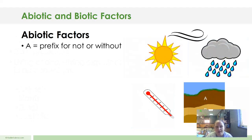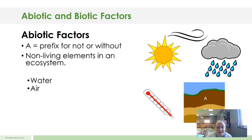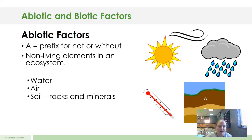Now we have abiotic factors — 'a' meaning the prefix of not or without, biotic meaning living. So non-living elements in an ecosystem include water. Water, even though a lot of people say it has living stuff in it that need it to survive — water itself, H₂O, is not living. It's just comprised of different elements. Air has living stuff in it or that need it, but air is not living. Soil, rocks, and minerals — it has living stuff living in them, but they are not living themselves. Sunlight and temperature are also abiotic factors — all of those in the ecosystem are non-living, so we call them abiotic factors.